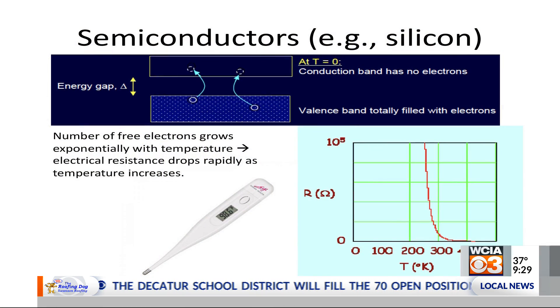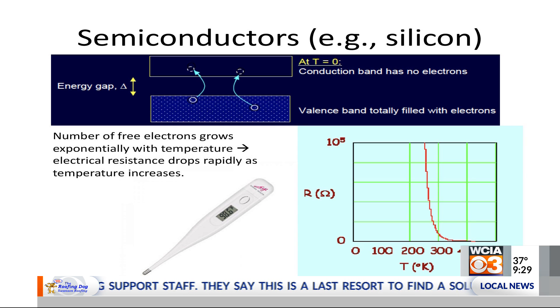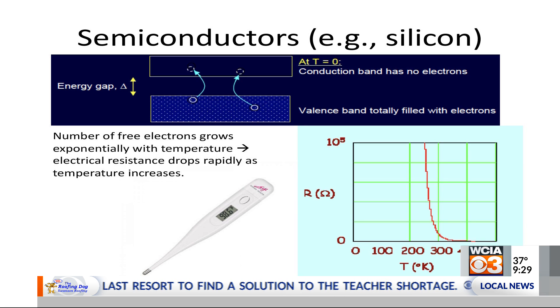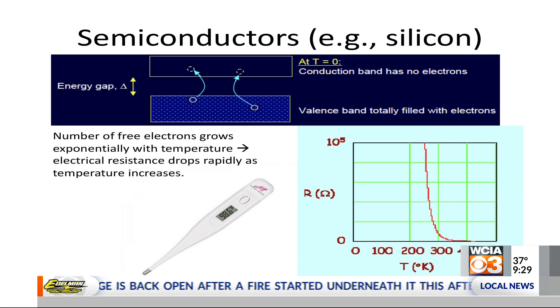The way semiconductors work is that normally they don't really have any free electrons. All the electrons are stuck in this valence band — they're not free. If you add a little bit of heat, you pop some of them up to this upper band, this conduction band, and then they can move. You don't put very many up — only about one in a billion — but that's enough to really change the resistance of the material, because you have charge so things can flow. If you don't have any charge, things don't flow and you have very high resistance, so the resistance drops very quickly with temperature.